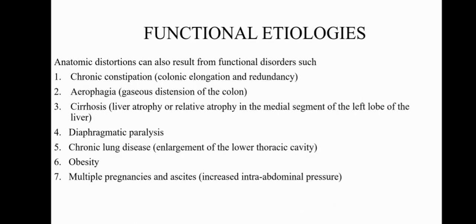These anatomic distortions can also result from certain functional disorders such as chronic constipation, in which there is colonic elongation and redundancy; aerophagia, in which there is gaseous distension of the colon; cirrhosis, where there is liver atrophy or relative atrophy in the medial segment of the left lobe of the liver; diaphragmatic paralysis; chronic lung disease, which can result in enlargement of the lower thoracic cavity; obesity; and any condition which causes increased intra-abdominal pressure such as multiple pregnancies and ascites.